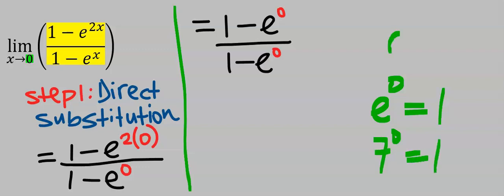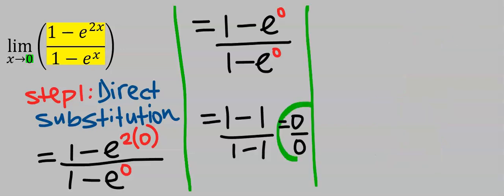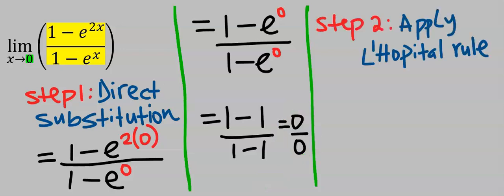That is, e to the power of zero is one. However, zero cannot raise itself up because it does not exist. Here we got zero over zero, which is undefined. Hence, direct substitution failed.